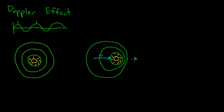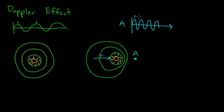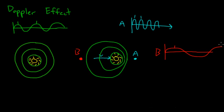If we put an observer at point A in front of the source, they will see wave crests much more closely compressed together — a shorter wavelength. An observer at point B behind the source will see the opposite: waves stretched out, giving a much longer wavelength. This idea that an object moving away from you stretches the wavelength of its light toward the red part of the spectrum is called redshift.